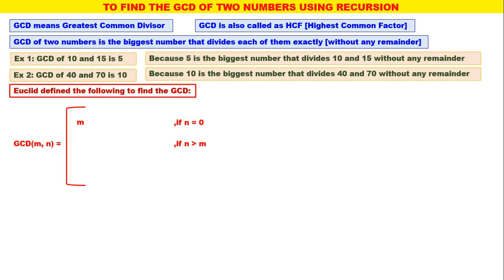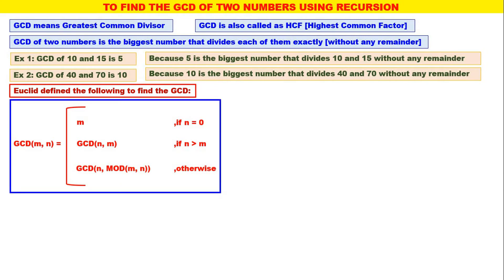Suppose if N is greater than M, meaning the second parameter N is greater than the first parameter M, you exchange N and M — make it GCD of N, M. This rule implies the first parameter should always be greater than the second parameter. When the second parameter is greater, exchange them. Otherwise, GCD of M, N calls GCD of N, M mod N. This is the Euclid rule.